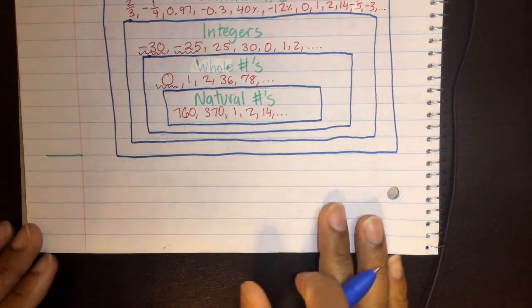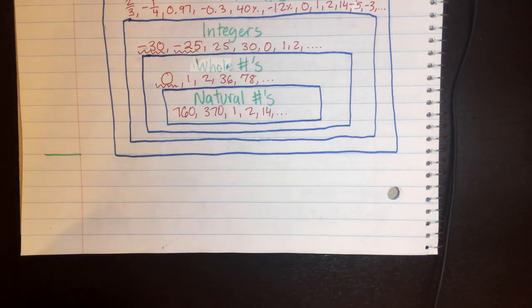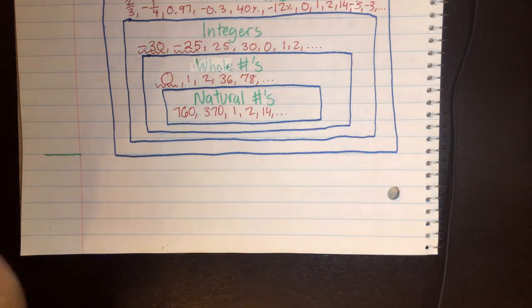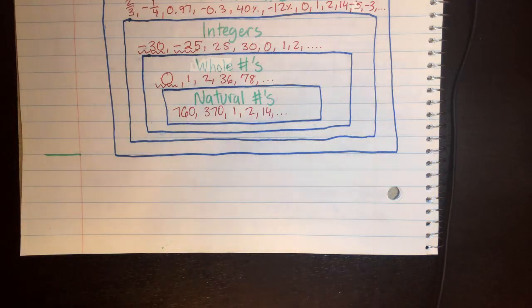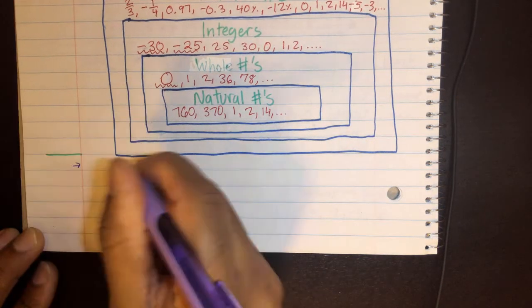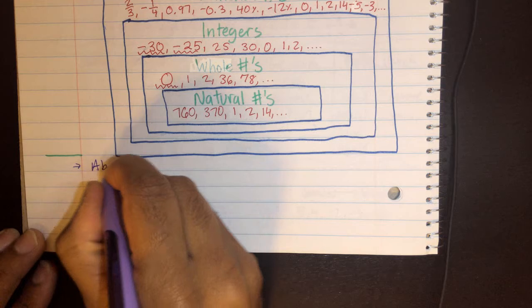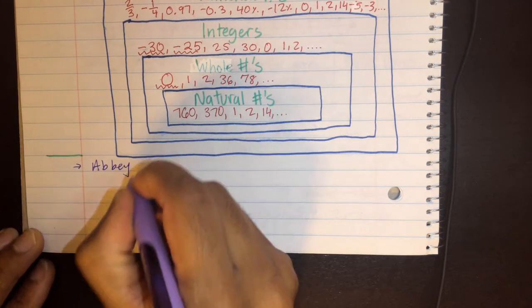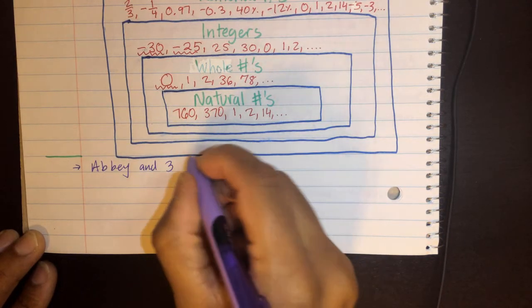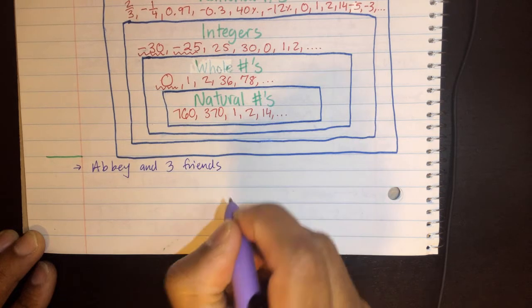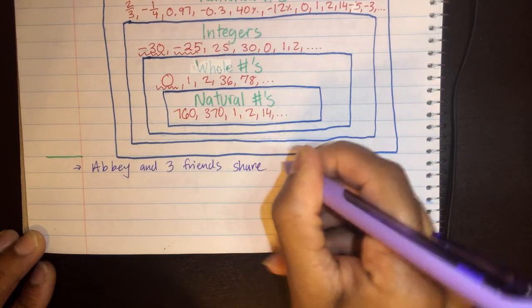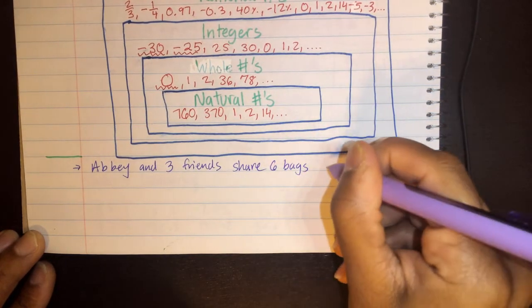So we're going to do this on the bottom of page 10. If you don't have enough space, you can do it on page 11. Remember, y'all are getting into that practice of how do I organize my notebook, right? So take care of that. So let's write down the situation. I'm going to write down about Abbey and three friends and how they share six bags of candy.